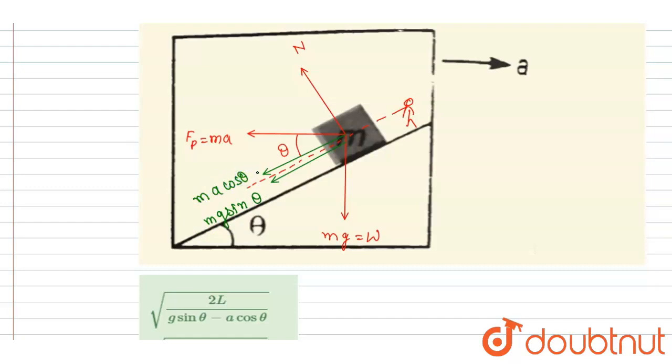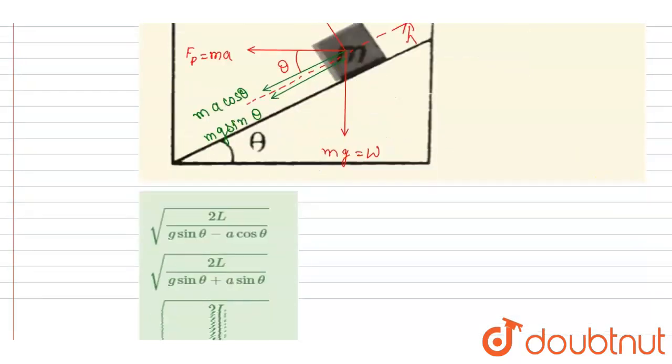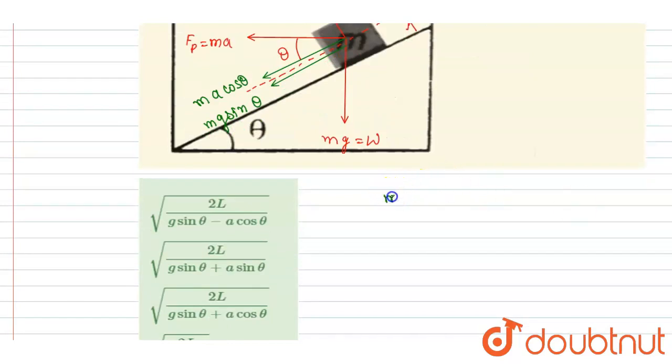So the net pseudo force along the incline will be ma cos theta plus mg sine theta. This will be the net force along the incline.